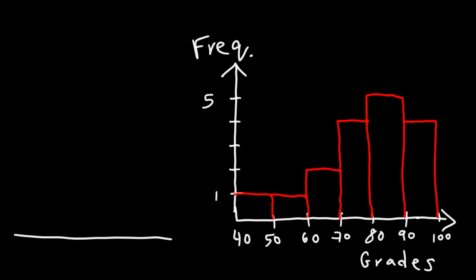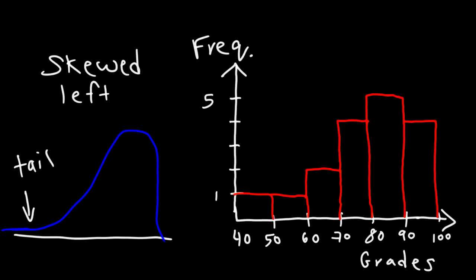So our data has this type of shape. Notice that we have a long tail on the left side. So therefore, this type of data we could say it's skewed to the left, or it has a negative skew. It's not skewed to the right, and it's not symmetric.